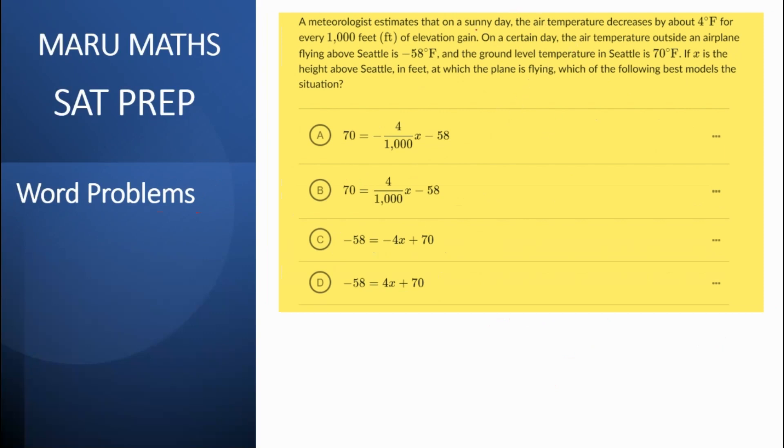A meteorologist estimates on a sunny day, the air temperature decreases by 4 degrees for every 1000 feet. On a certain day, the air temperature outside the airplane flying above Seattle is 58 degrees and the ground temperature is 70 degrees.